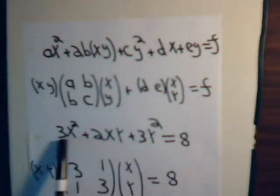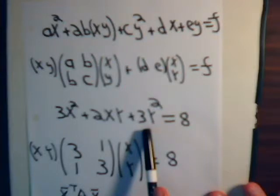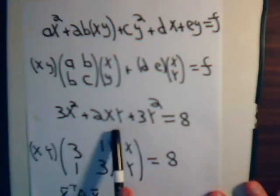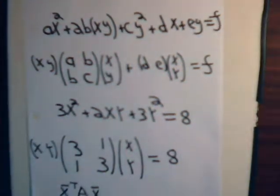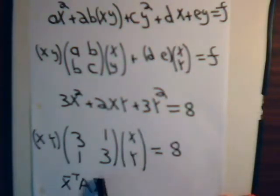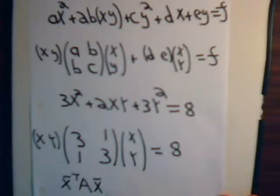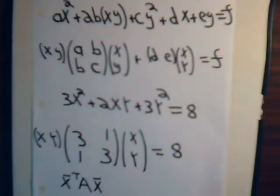First, let's write this in matrix form. The coefficient of x-squared is 3, the coefficient of y-squared is 3, and the coefficient of xy is 2, so we take half of that — giving 1 — for the off-diagonal elements. This is written in matrix form; if we call this matrix A, then we have the column vector x, its transpose as a row vector, giving our general quadratic expression. For quadratic expressions, the relevant matrix — whether 2×2, 3×3, or n×n — will always be symmetrical.